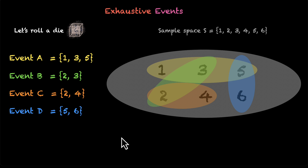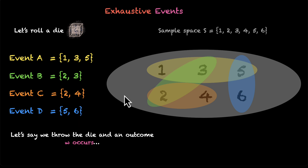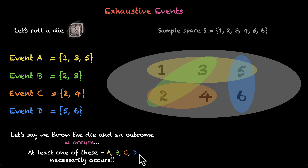Now let's do something interesting — let's do an experiment, let's throw a die. What can we say about this outcome? Well, it could be anything from 1, 2, 3, 4, 5, and 6. It can't be anything else; it can never be outside the sample space. But as we can see, all 4 of these events have together covered the entire sample space. Some event is covering some number, and together they are covering all the numbers. So can we say that whenever we throw the die, at least one of them will necessarily occur?